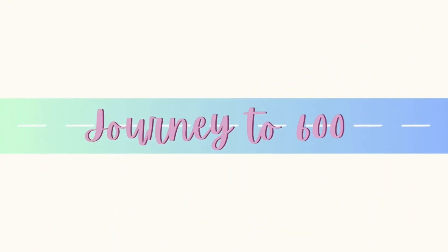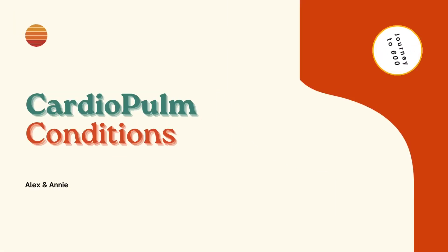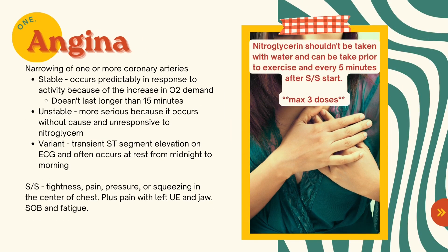Thank you for joining us on Journey to 600. Today we're going to be going over various cardiopulmonary conditions. First, we're going to be going over angina, which is narrowing of one or more coronary arteries. It can fall into three categories: stable, unstable, and variant. Signs and symptoms include tightness, pain, pressure, or squeezing in the center of the chest.